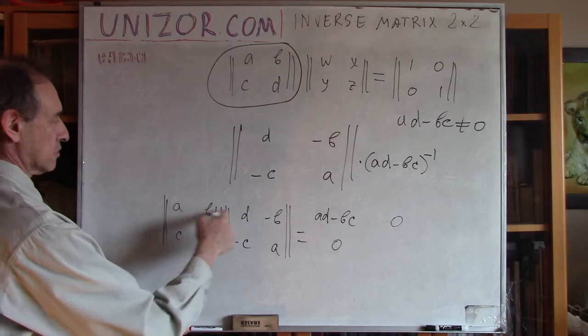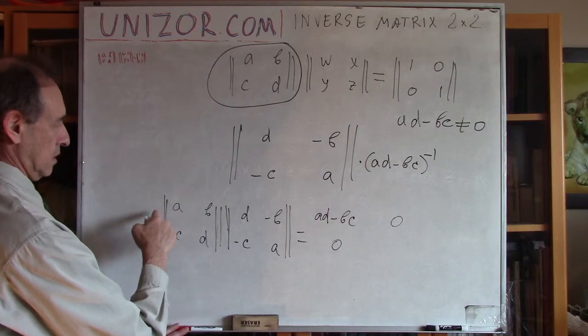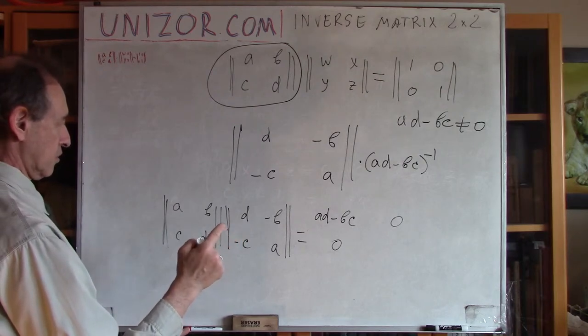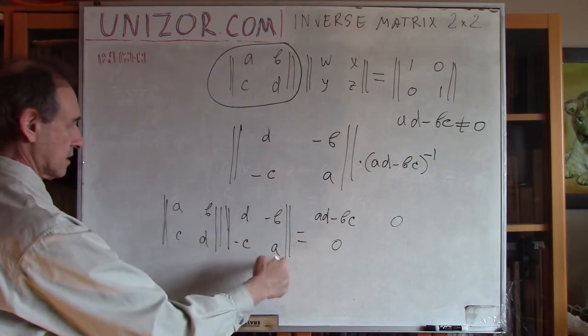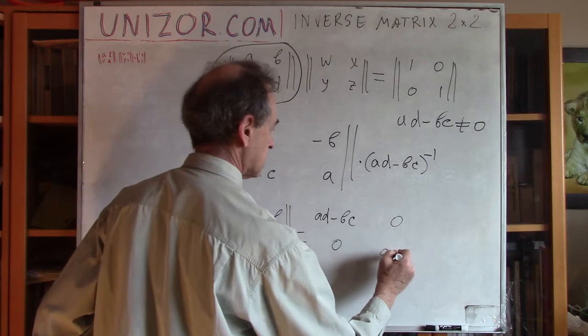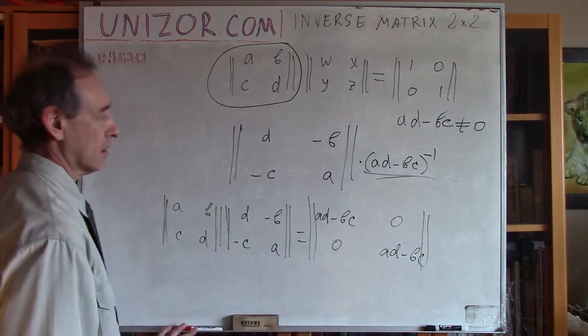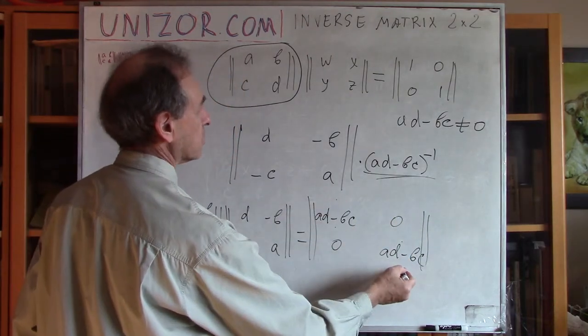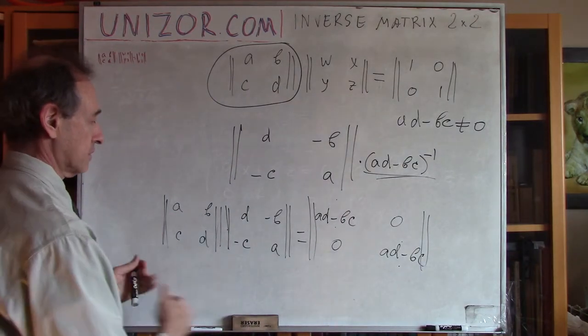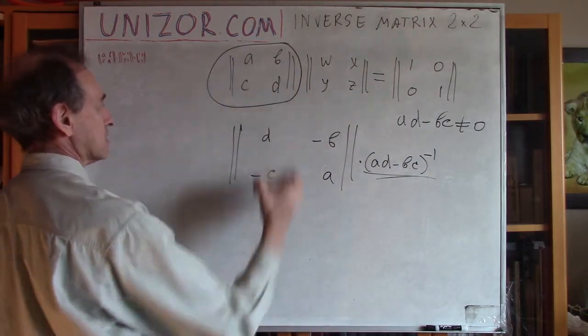And, finally, second row, second column. Second row, second column. Something is wrong. Oh, second row. Here. Second row, second column. Minus B, C plus A, D. So, A, D minus B, C. So, that's my matrix as a result. And, with this factor, this will be one and this will be one, which is exactly the identity matrix. So, I have derived with a correct solution of this equation. This is my matrix A, B, C, D minus one. To the power of minus one, which means inverse matrix.